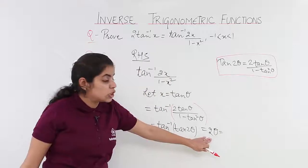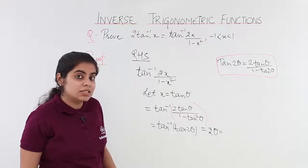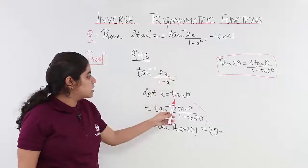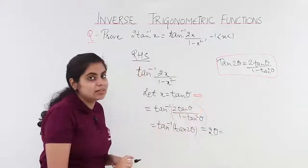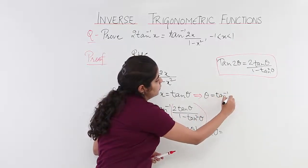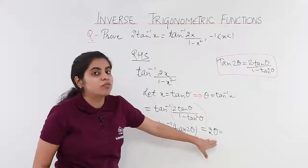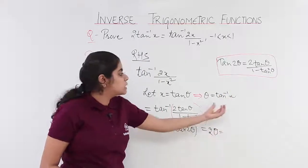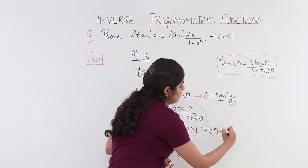Now, it is not 20, it is 2 theta. We need to keep it in mind. What is theta? Theta is obtained from this step. My theta is nothing but tan inverse x. So theta is tan inverse x, and then what we do in the final step of 2 theta, theta is basically replaced by tan inverse x from equation number 1.